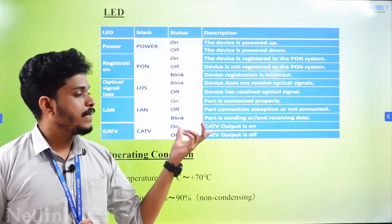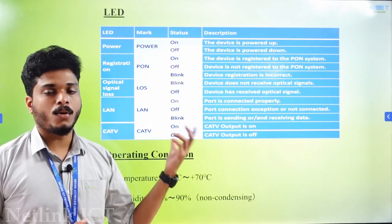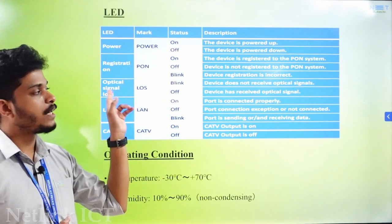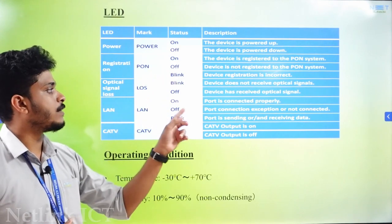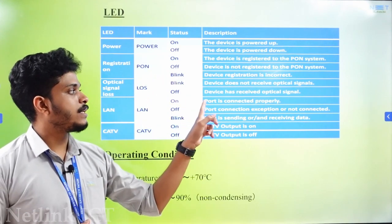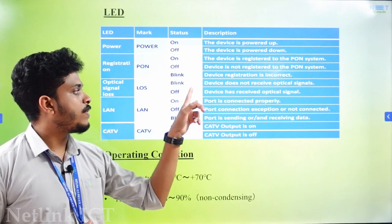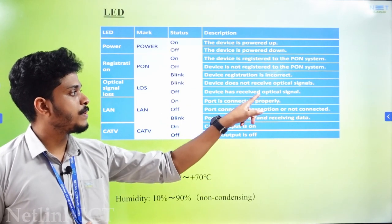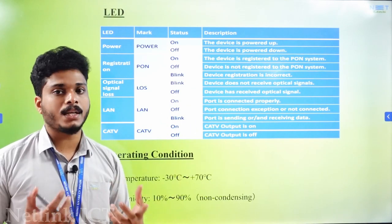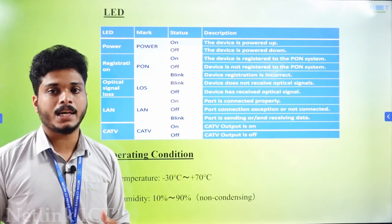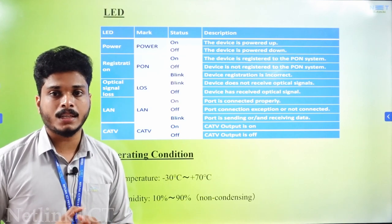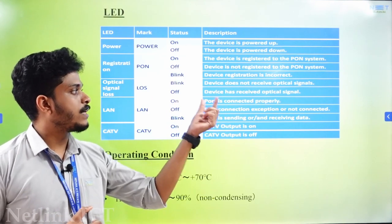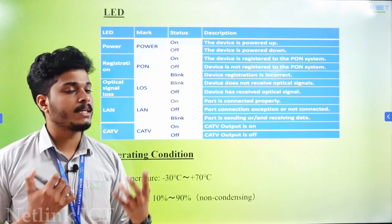Then the PON is OFF — we have a LOS light. LOS indicator: if it is OFF, the device has received an optical signal. If it is ON, it means there is a loss of signal — it does not have an optical signal.